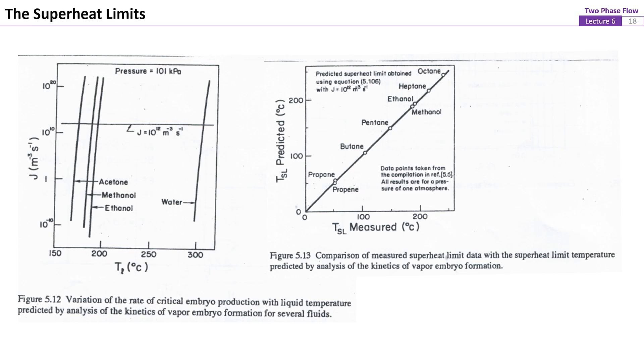For organic fluids shown here, such as ethanol and methanol, the measured superheat temperatures agree well with the predicted values by using equation 5.110. Therefore, choosing J equals 10 to the 12th as the threshold for the kinetic limit of superheat seems to be reasonable for this kind of fluids.